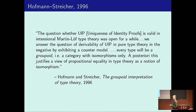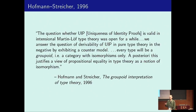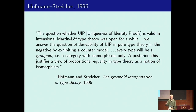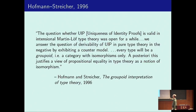They presented their model in groupoids — in ordinary one-groupoids, not higher groupoids — essentially as a counterexample to the provability of the uniqueness of identity proofs. Uniqueness of identity proofs says that any two elements in an identity type are related by another identity type. This was the first model to show that that is not provable, because there are also models where types are groupoids. But at the end of their paper, they say this also justifies a view of propositional equality in type theory as a notion of isomorphism — so they're pointing towards univalence.